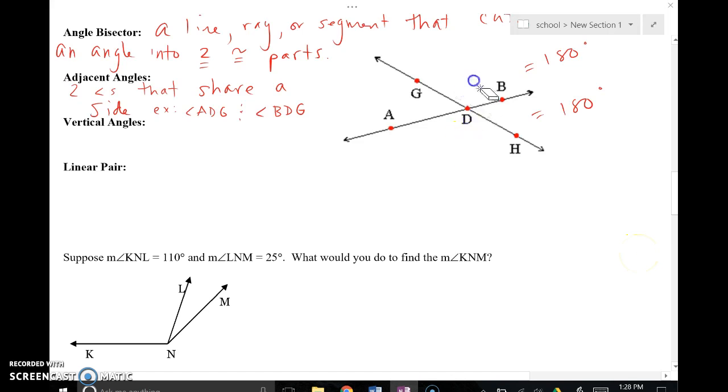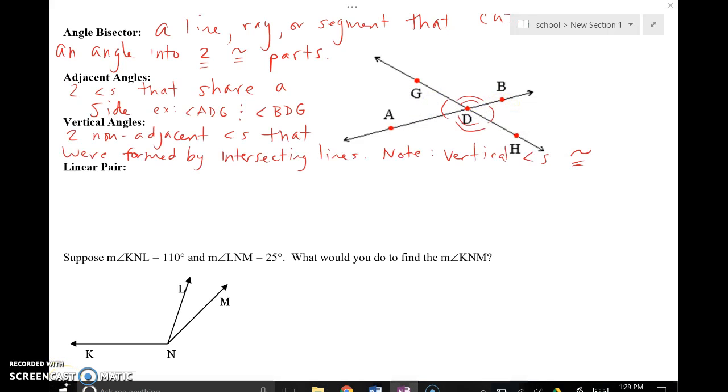Another pair of vertical angles in this scenario would be here and here. Again, non-adjacent formed by intersecting lines, and these two would be the same exact measure. You need to pause your screen really quickly to get the definitions for the previous three concepts. Please go ahead.